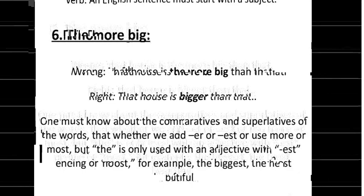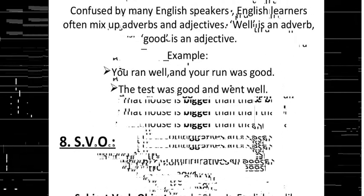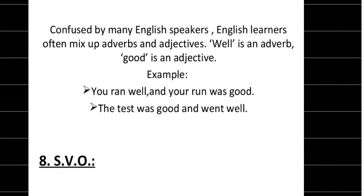Next is the confusion between adverbs and adjectives, which confuses many English speakers and learners. 'Well' is an adverb and 'good' is an adjective. For example: 'you ran well' — your run was good. 'The test was good' and 'she ran well.' Understanding this difference between adjective and adverb is essential.